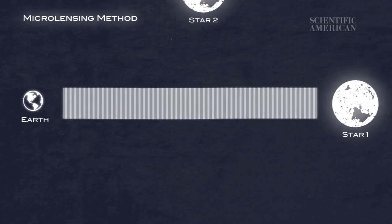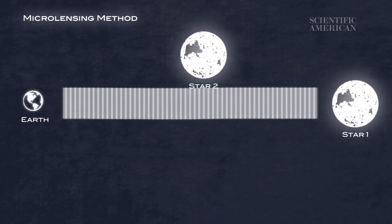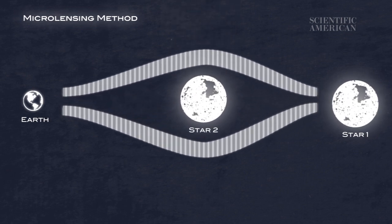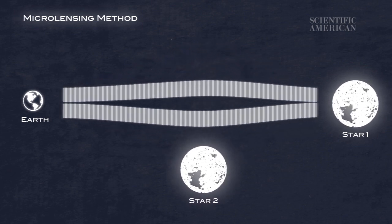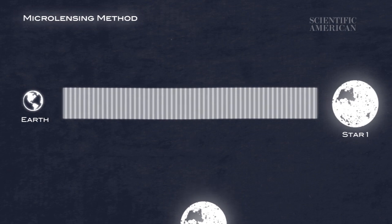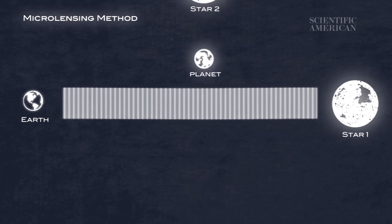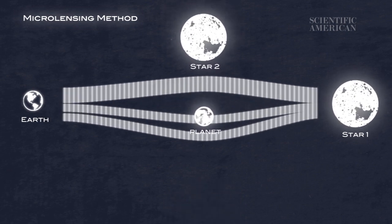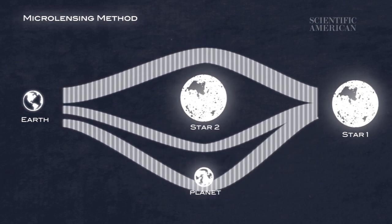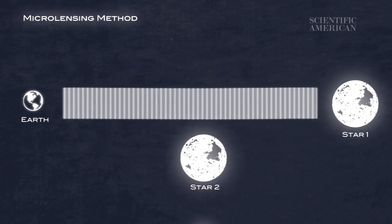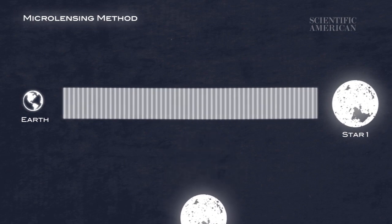Another tactic is called microlensing. Einstein's general theory of relativity tells us that massive objects bend light rays like a lens. When two stars align, the star that's farther away becomes magnified. What astronomers see is the faint background star brighten and then fade. But planets can bend these light rays too, so they tweak the symmetry of the magnifying lens. Now the faint star brightens and fades in a more herky-jerky pattern, revealing an unseen planet.